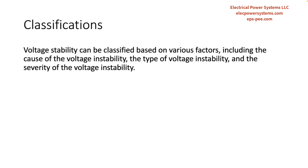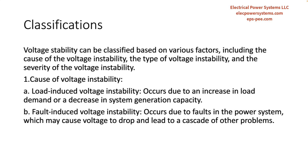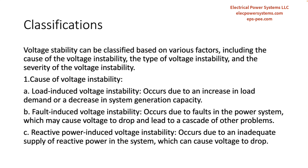Voltage stability can be classified based on various factors, including the cause of the voltage instability, the type, and the severity. Regarding the cause: load-induced voltage instability occurs due to an increase in load demand or a decrease in system generation capacity; fault-induced voltage instability occurs due to faults in the power system, which may cause voltage to drop and lead to a cascade of other problems; and reactive power-induced voltage instability occurs due to an inadequate supply of reactive power, which can cause voltage to drop.